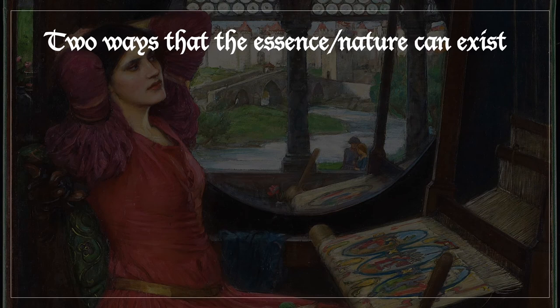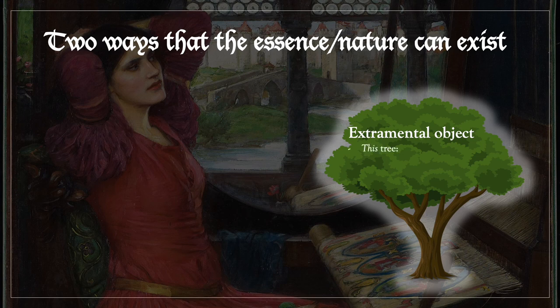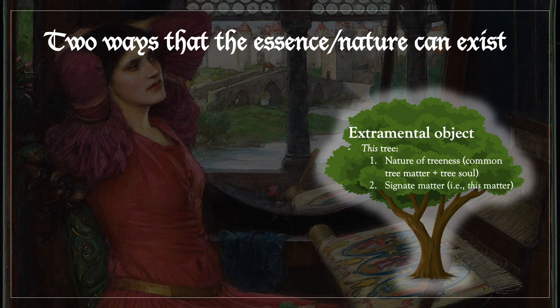St. Thomas says that there are two ways in which an essence, or nature, can exist. The first way is in an extramental object, or thing — by extramental here we just mean outside the mind. Here's an example: this tree. This tree, or this extramental object, is composed out of two parts: the nature of treeness, which itself is composed out of common tree matter and the tree soul or substantial form, and signate matter — that is, this matter.